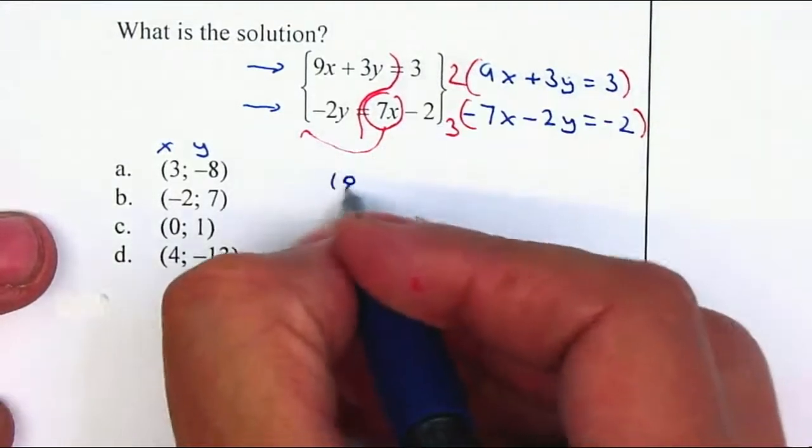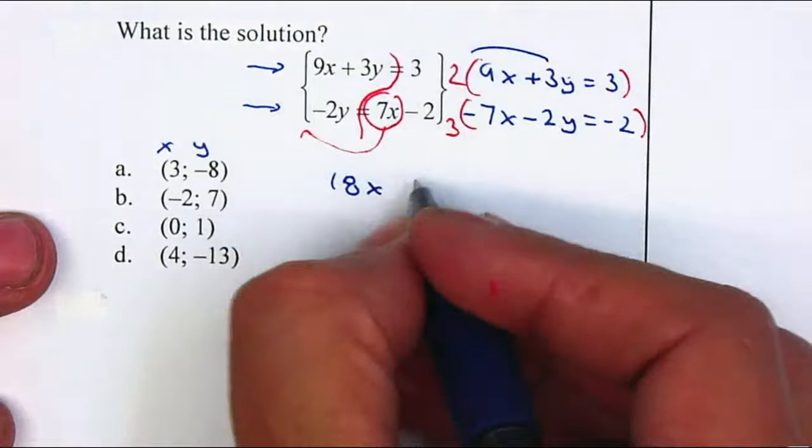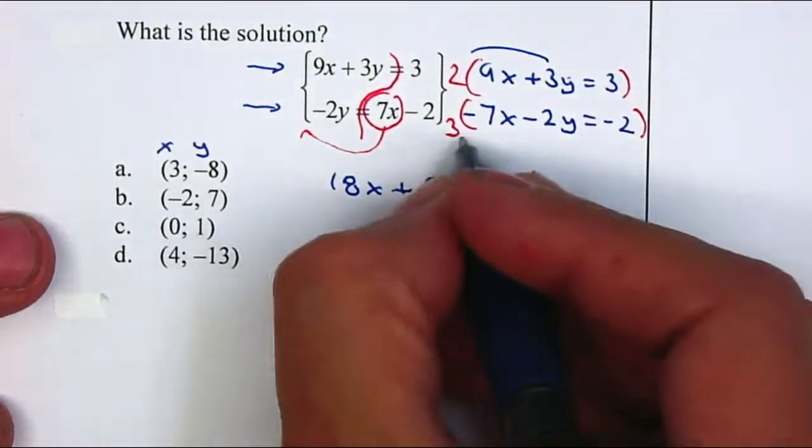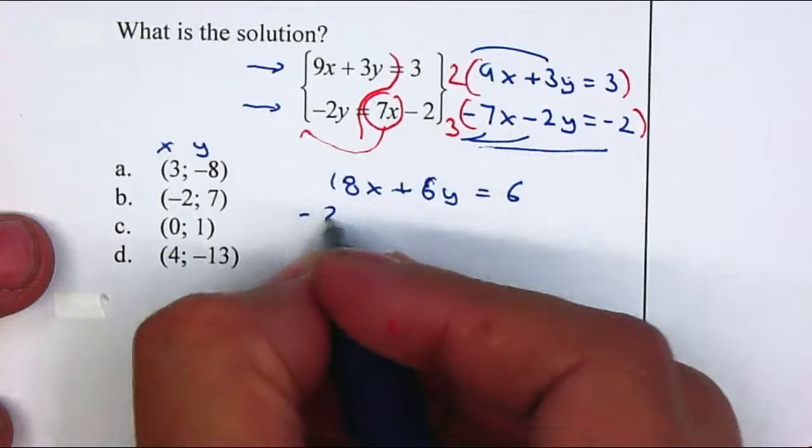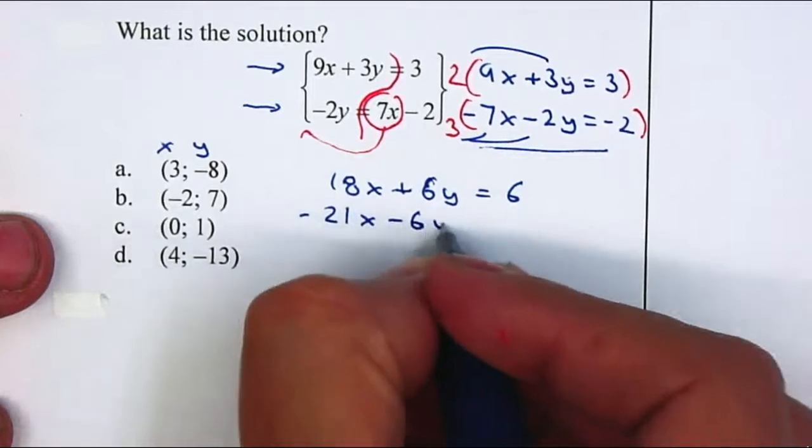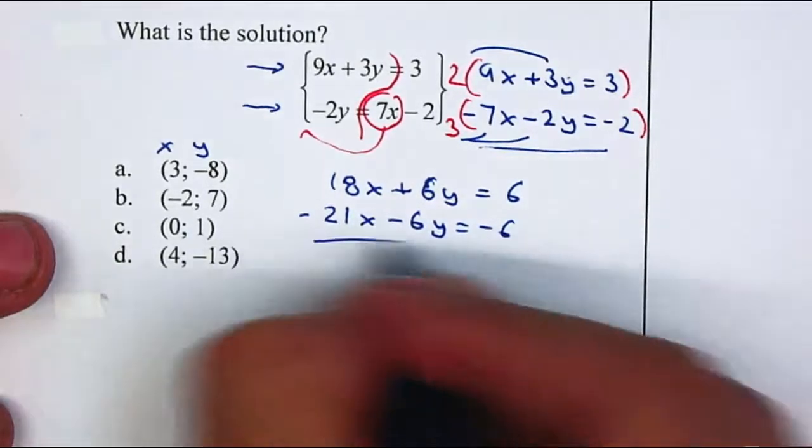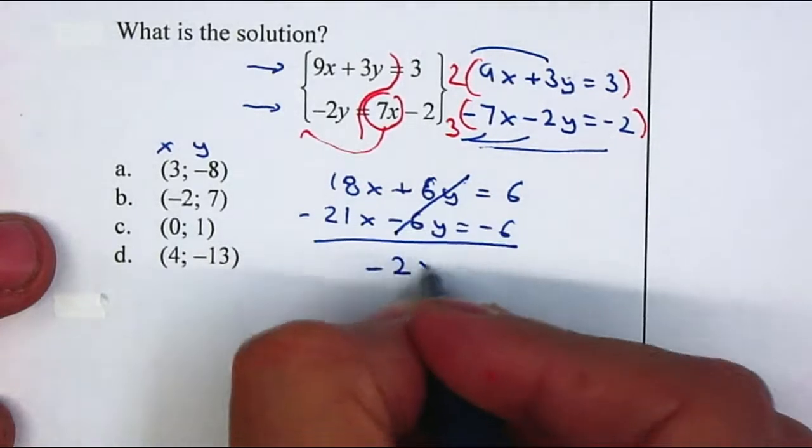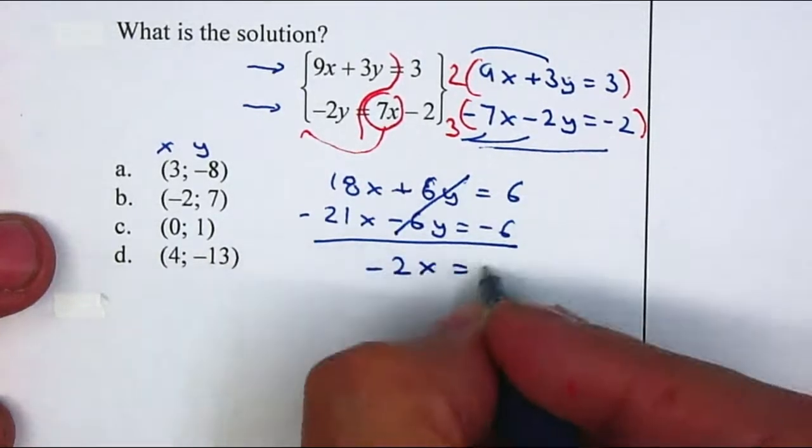That will give me 18x plus 6y is equal to 6. Multiply each one by 3. That gives me a negative 21x minus 6y is equal to negative 6. The y's cancel. This will give me negative 2x. And 6 minus 6 will give me a 0.